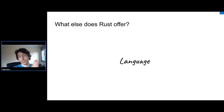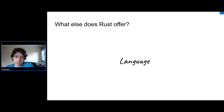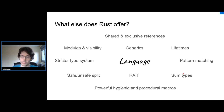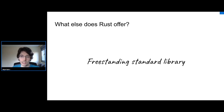Apart from the no-undefined-behavior property — which is the key reason we want Rust in the kernel — Rust also offers other things. You could say it's like a cleaned-up C or C++. It offers a strict type system, modules, generics, lifetimes, sum types, and many things we can take advantage of in the kernel. There is also the free standard library — for kernels, operating systems, embedded — which doesn't depend on an OS.